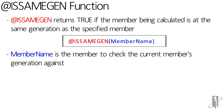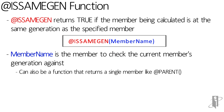Generations count from the top of the dimension downward, unlike levels that count from the lowest level of the dimension upward. If the member is at that same generation, it will return true. You can either specify a member name, or like most of these 'is' functions that take a single member name, you can use a function that returns a single member name, like Parent.